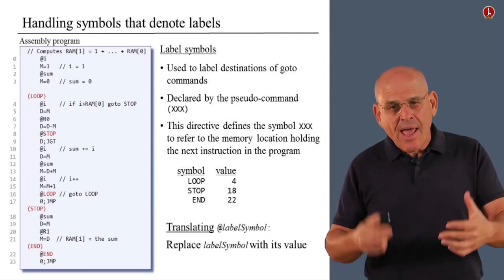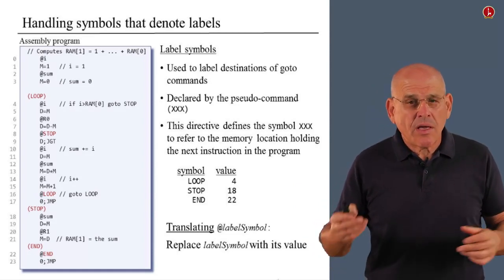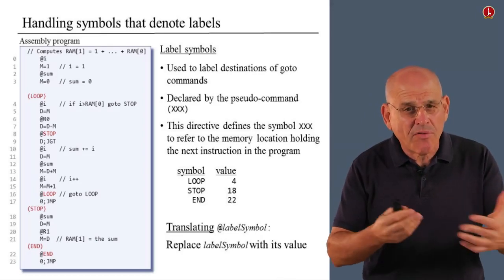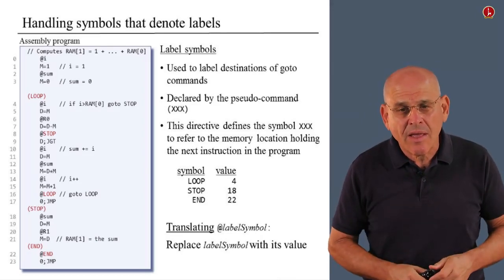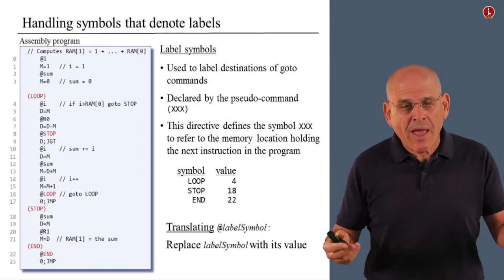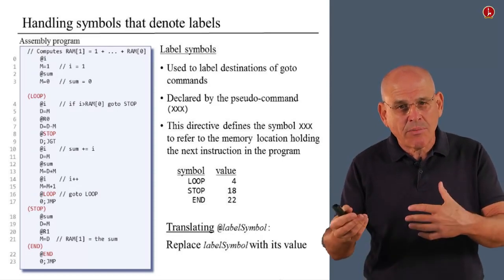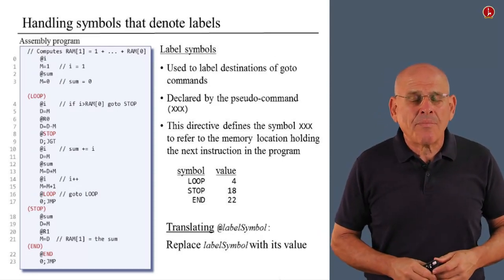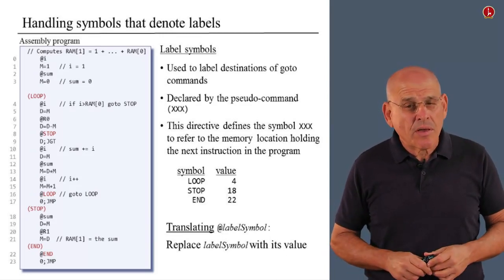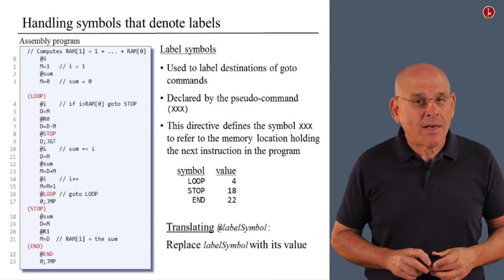So, how do you deal with an at label symbol instruction? Well, all you have to do is look up the value of this instruction, which you figured out before, as I just explained, and replace it with the symbol. What remains is an at value instruction, where value is a decimal number. And we know how to deal with this because we discussed it in the previous unit. So, that's how you deal with symbols that represent labels.